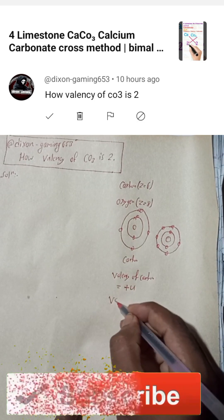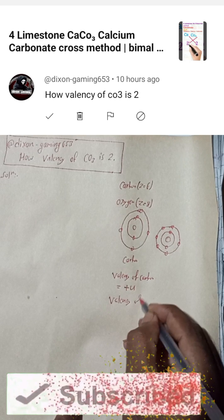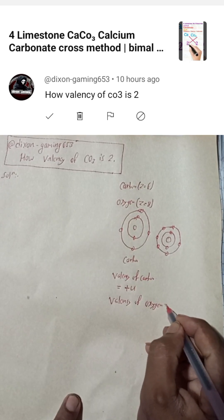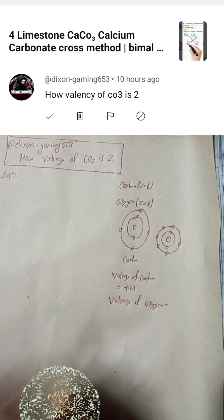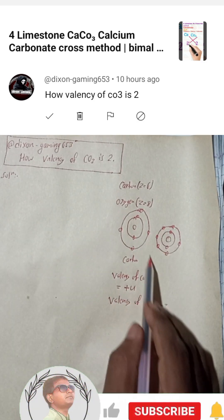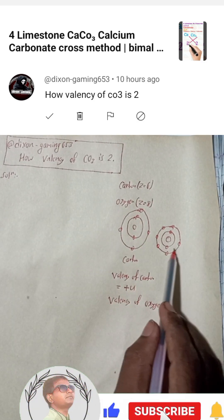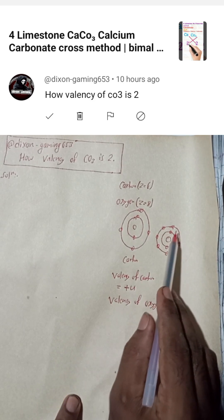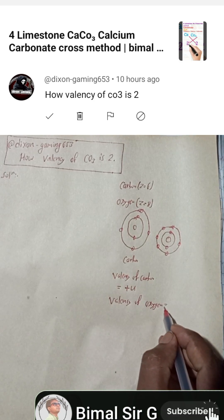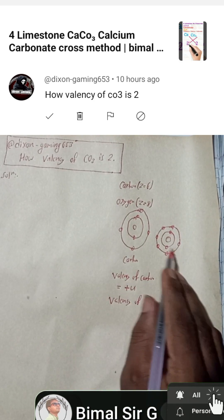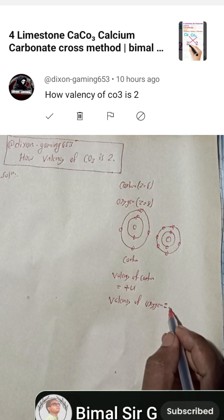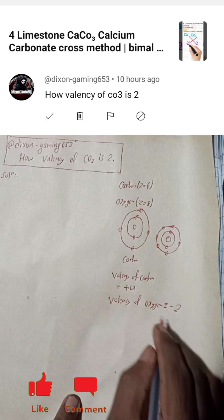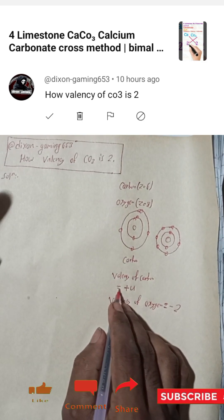For oxygen, in the outer shell there are 6 electrons and it needs 2 electrons to get the octet. That means it will gain from someone, so the valency of oxygen is minus 2.